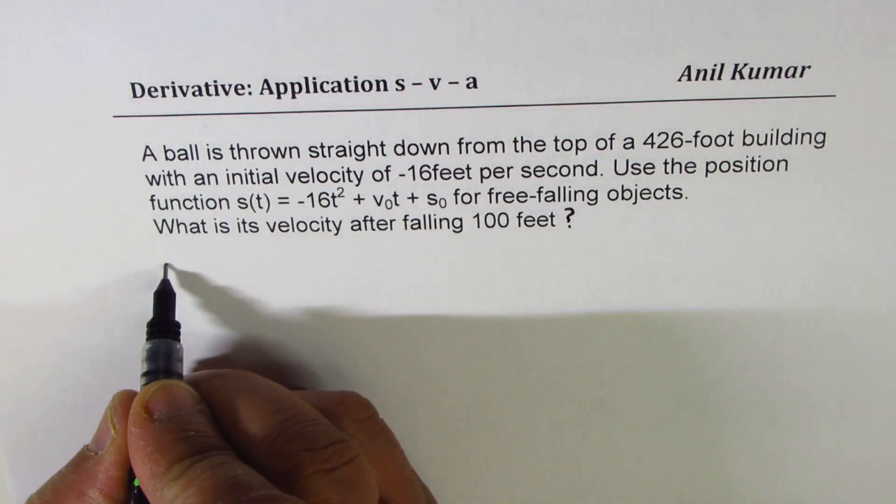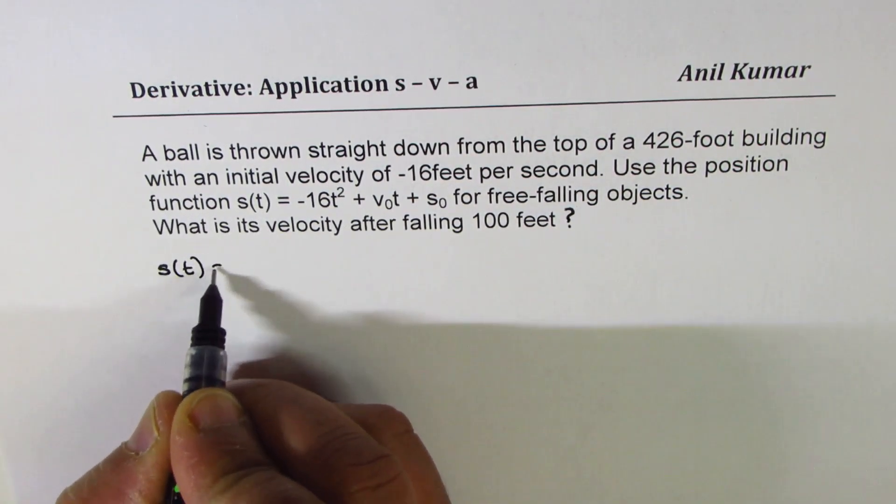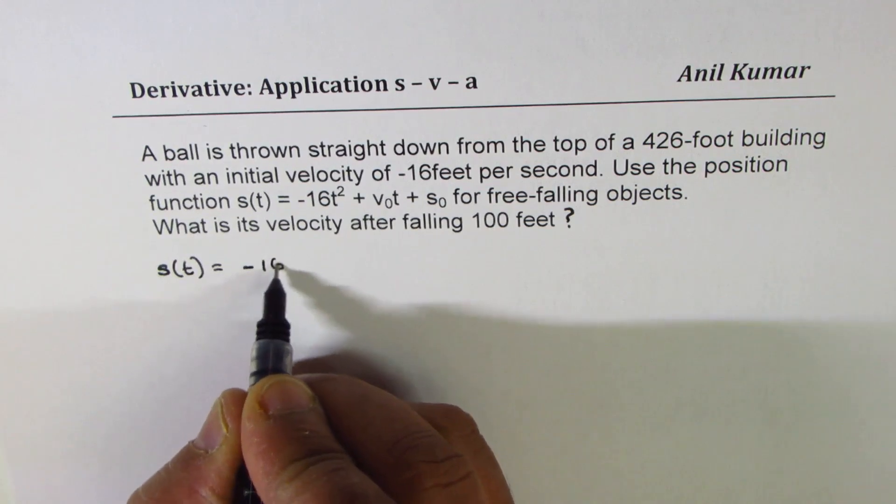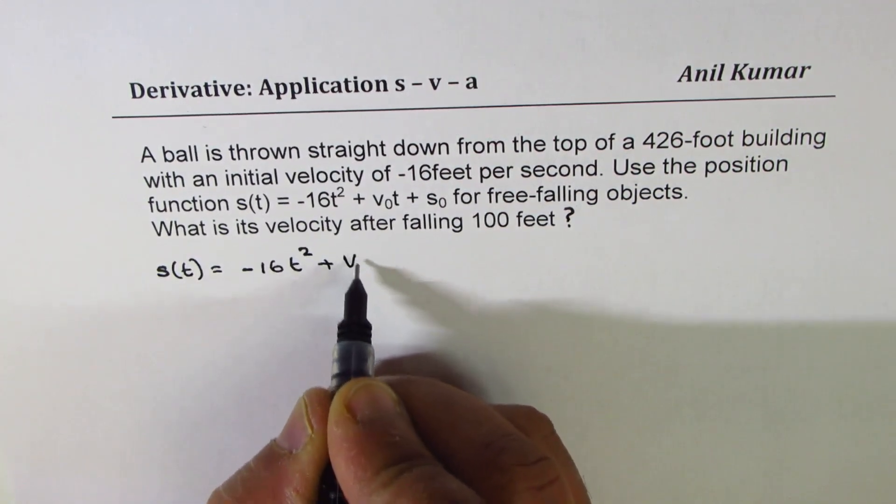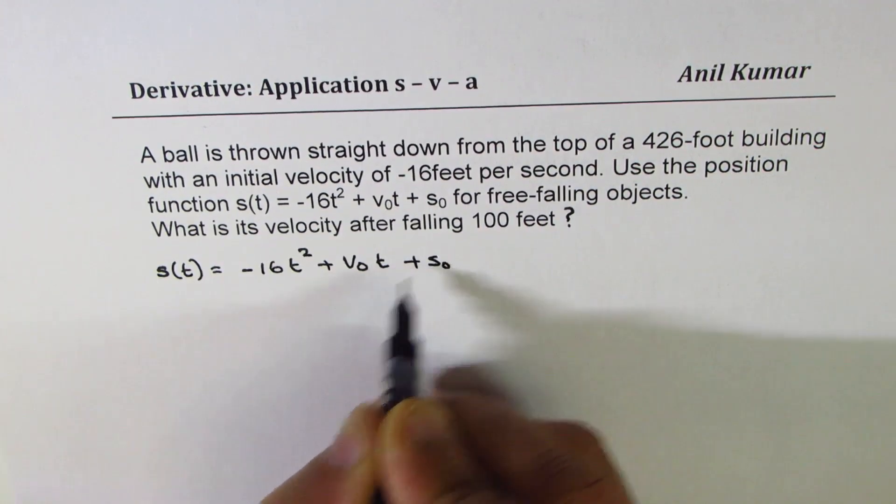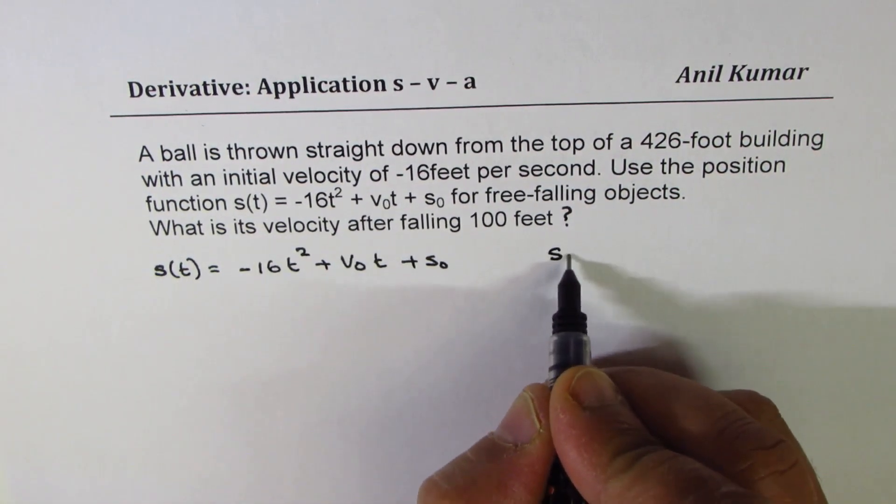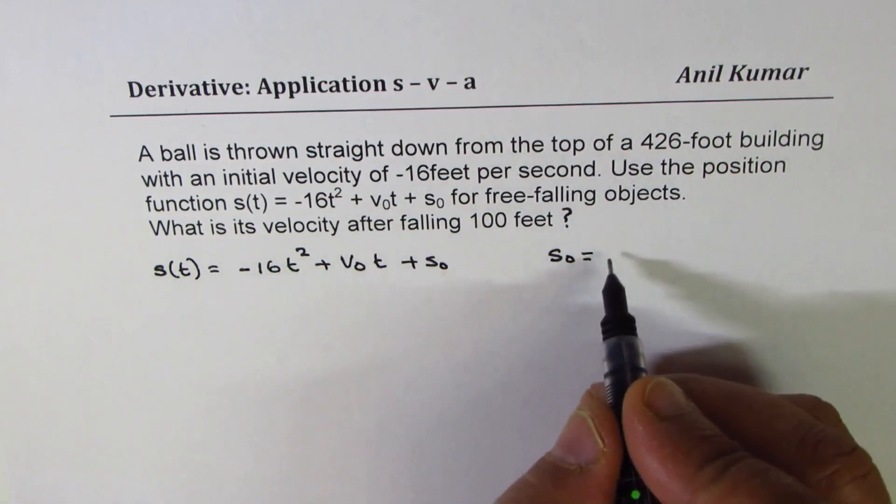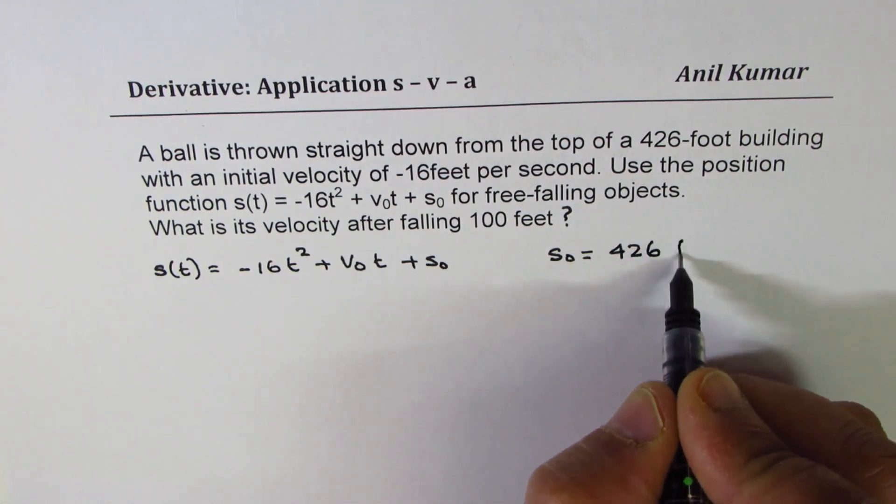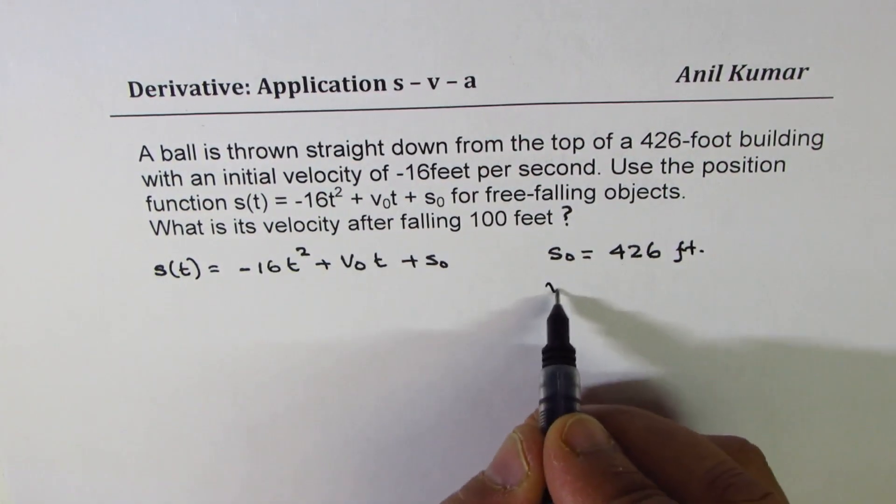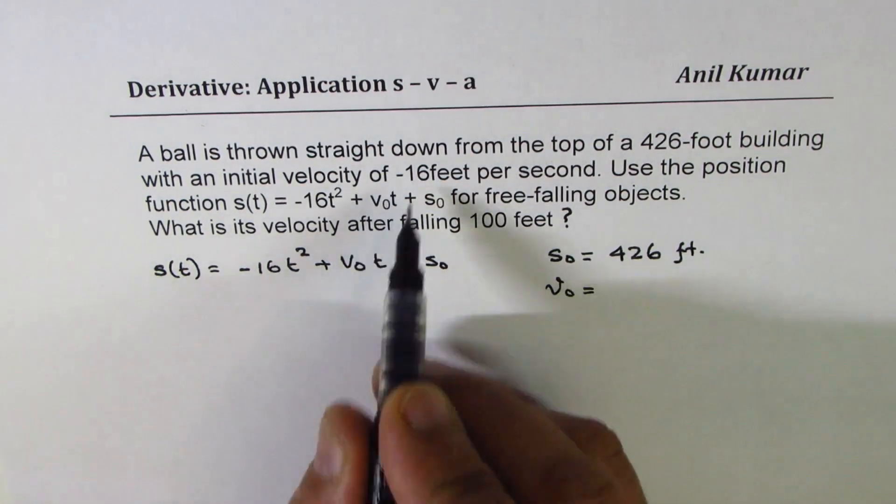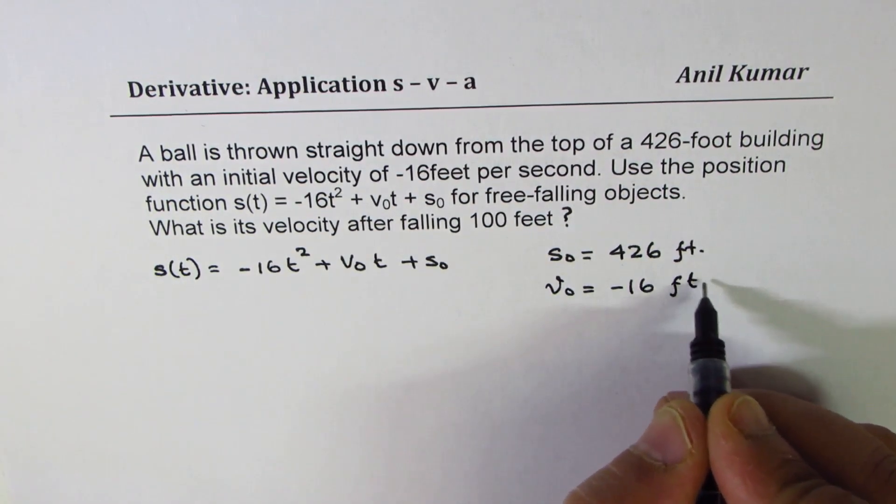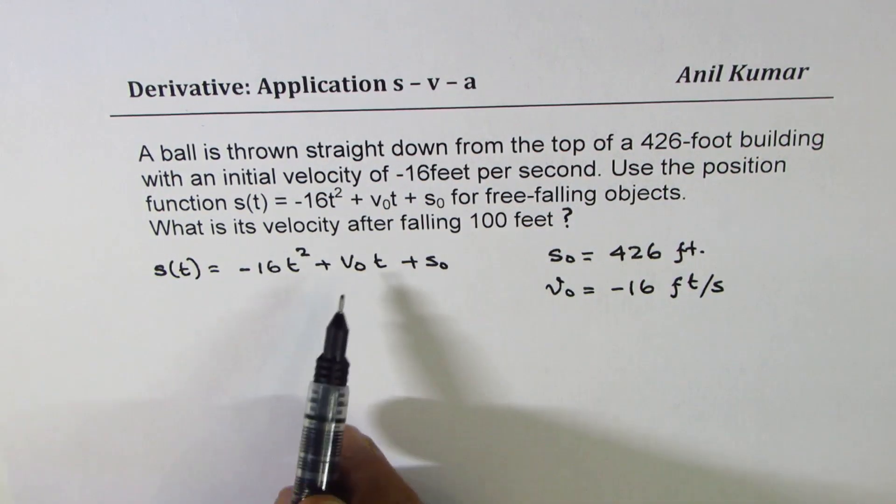So what we are given here is an equation for free fall. Height is being represented by s(t). It is -16t² + v₀t + s₀. Now, s₀ is the initial height from where the ball is thrown, that is 426 feet. v₀ is the initial velocity, which is minus 16 (minus because it is acting downwards) feet per second. So we know these two values.